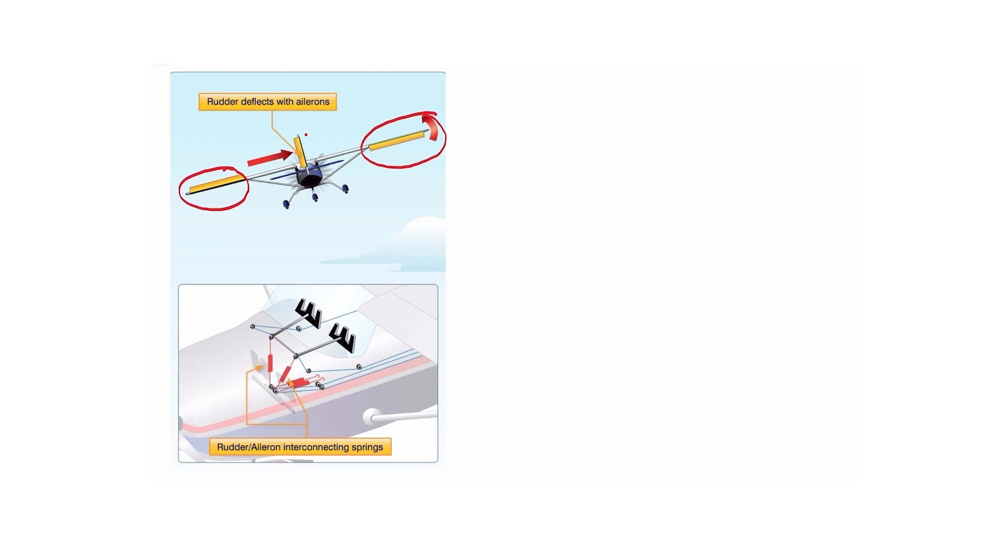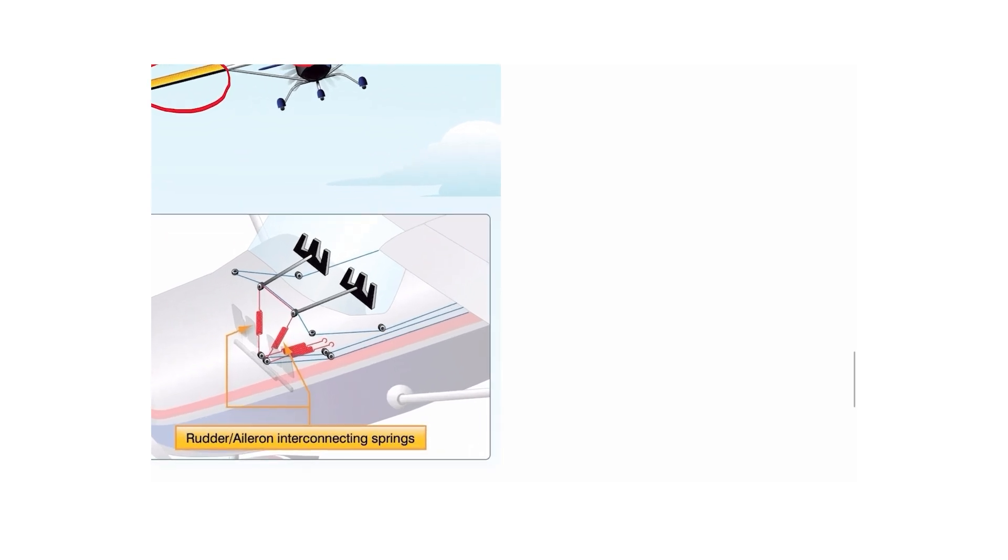What happens here is the airplane is capable of automatically putting left rudder in for us. And we oftentimes still need more rudder, but it just gives it an initial input of that rudder, and then we can put more in as we need it. So that's the aileron interconnect, and that's done with interconnecting aileron rudder via springs.